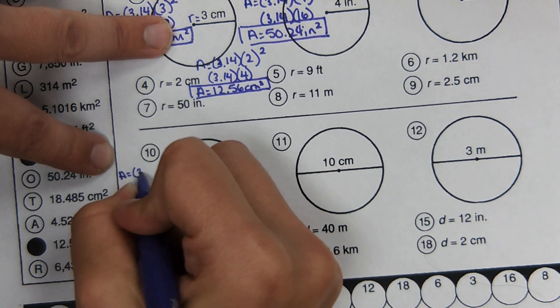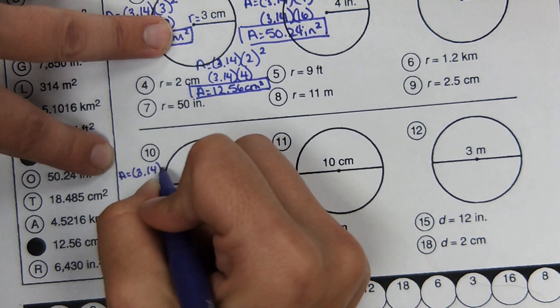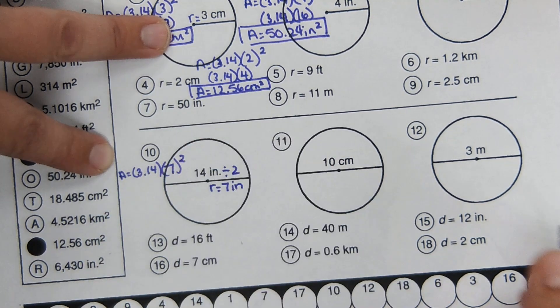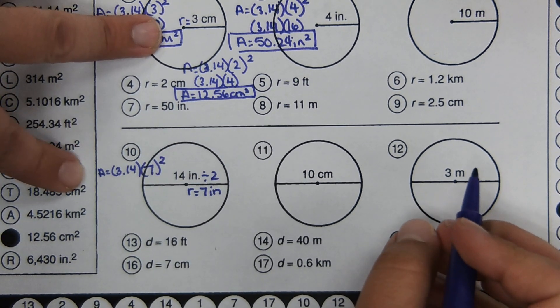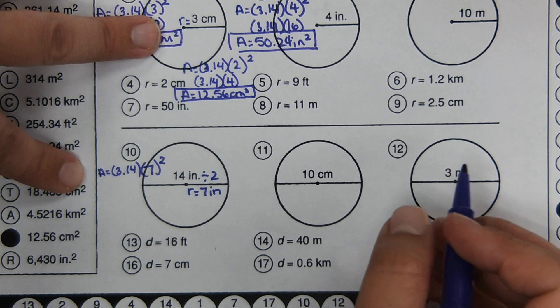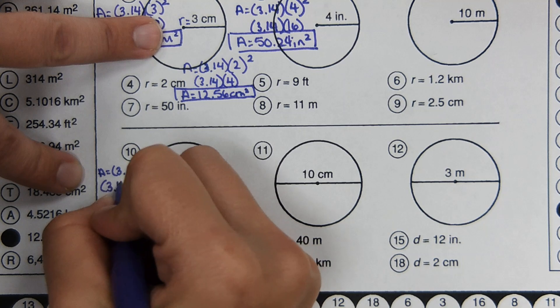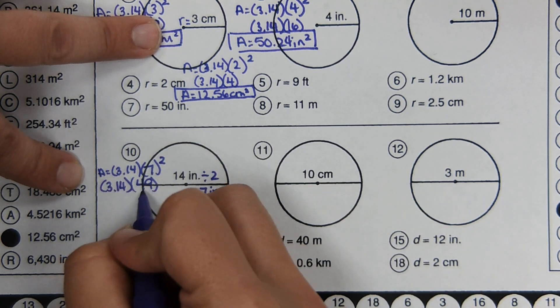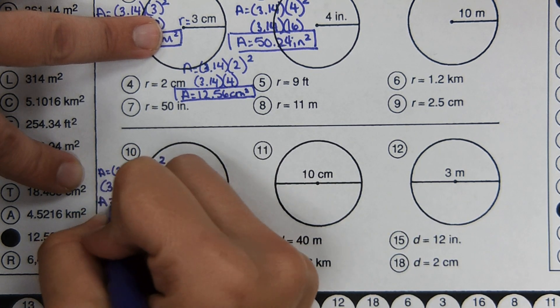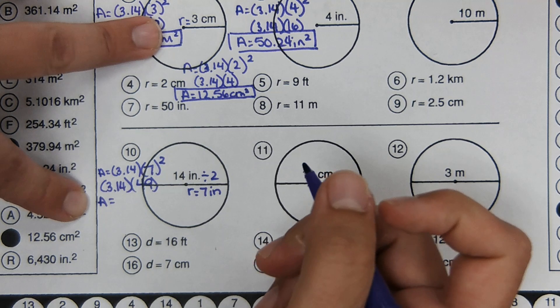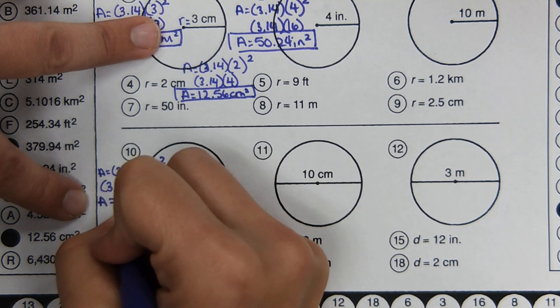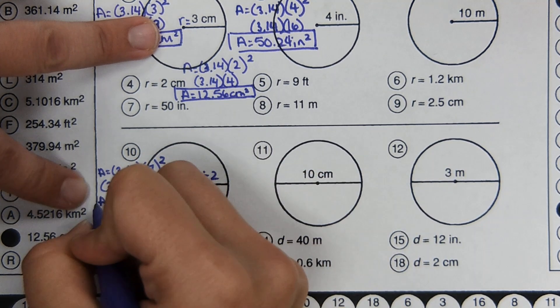So area equals 3.14. Seven squared. Seven squared would be 49. Multiply these two numbers. And we get 153.86 inches squared.